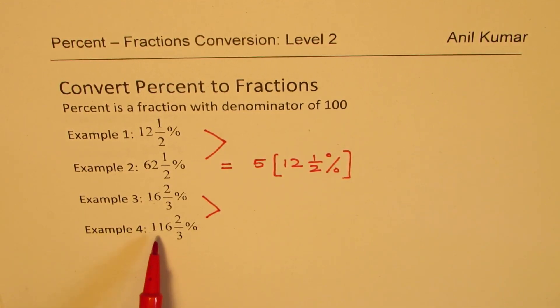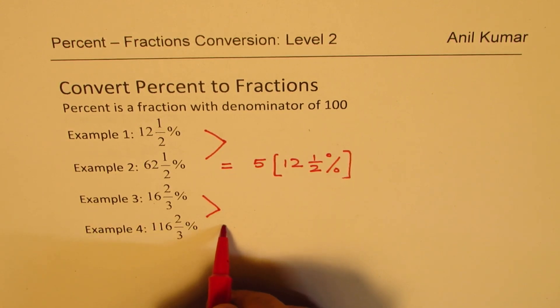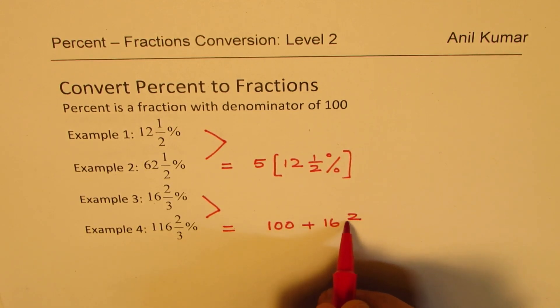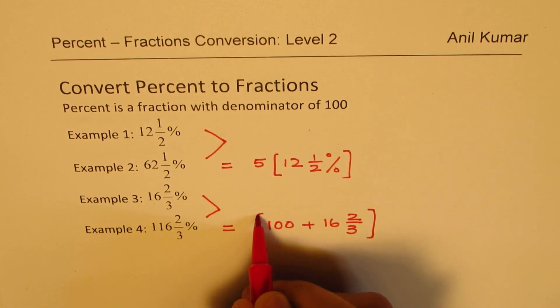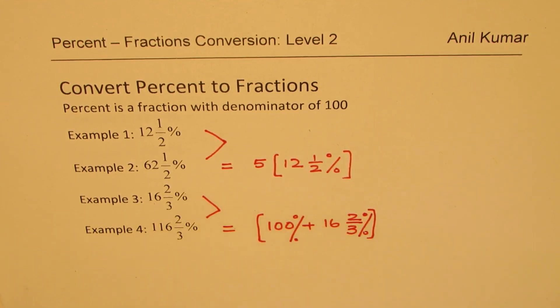When we write 116 2/3 and this is only 16 2/3, you could see this as, we could write the second one as 100 percent plus 16 2/3 percent. So that is kind of the relation. So it is 100 percent plus 16 2/3 percent.